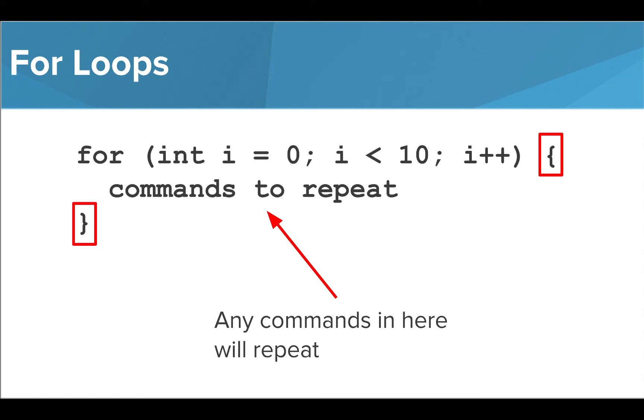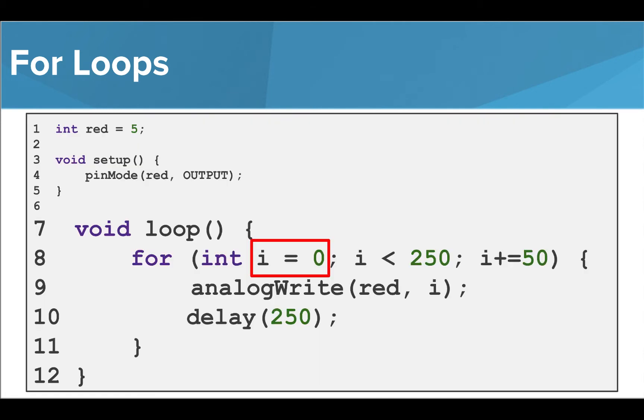Let's take a look at an example to make sure we understand. If we have this for loop, our variable i is starting at 0, continuing while i is less than 250, and adding 50 to the value each iteration.